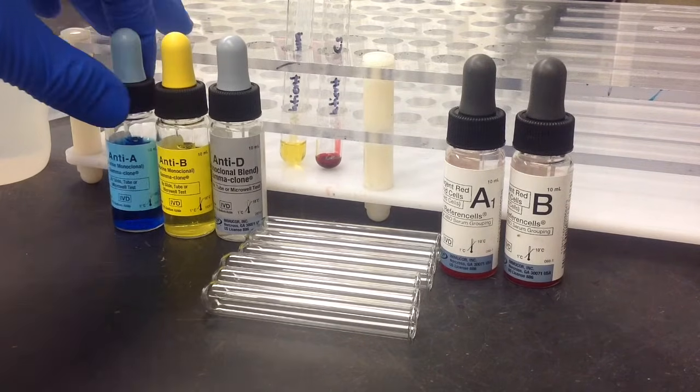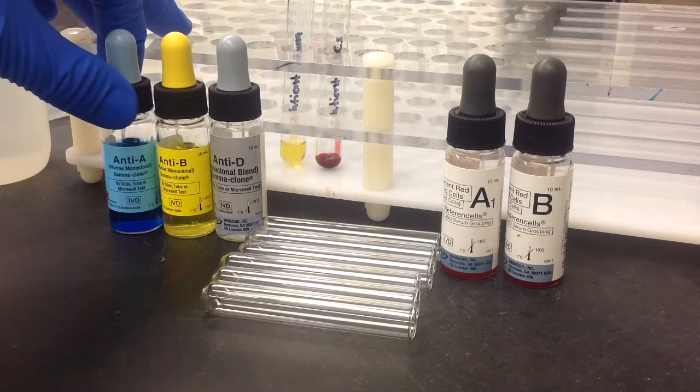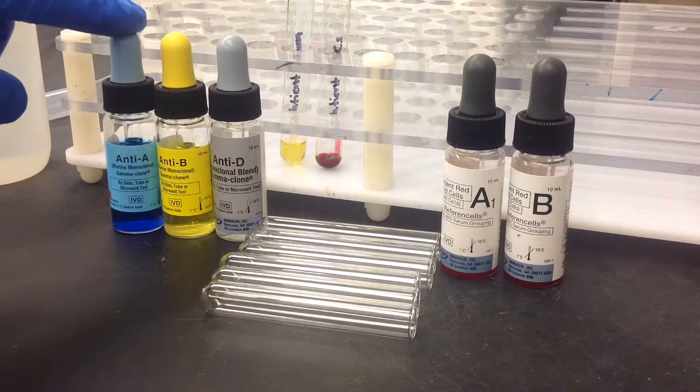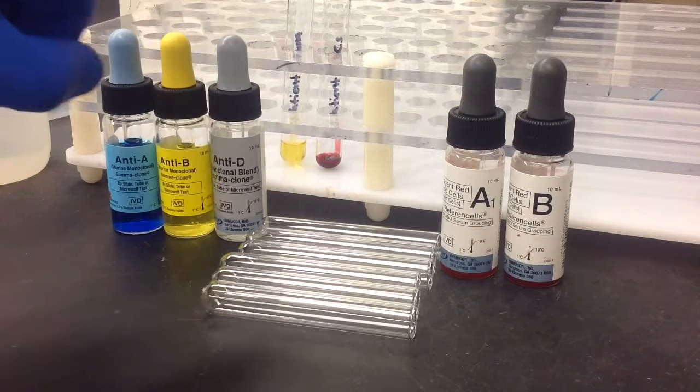In this video, I'm going to show you how to do a forward and reverse ABO/RH type. First thing you're going to need for your forward is your anti-sera: your A, B, and your anti-D.